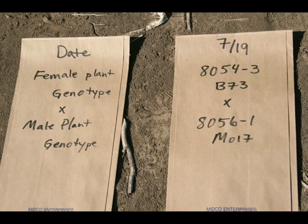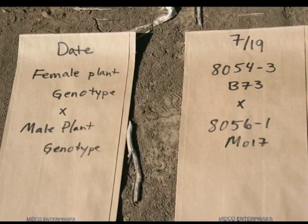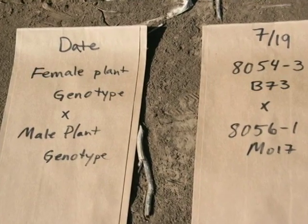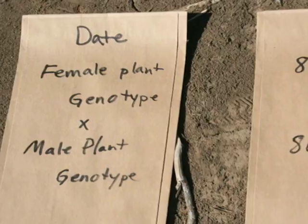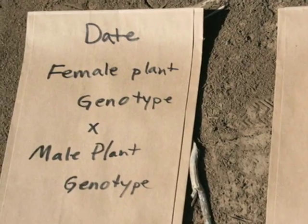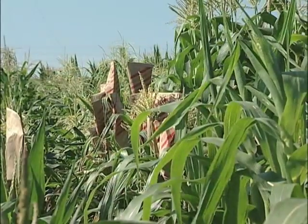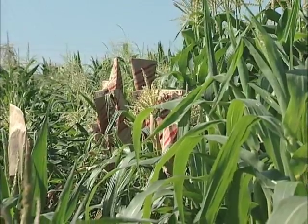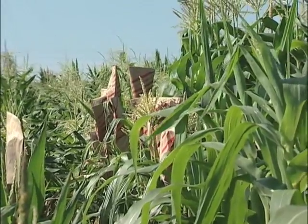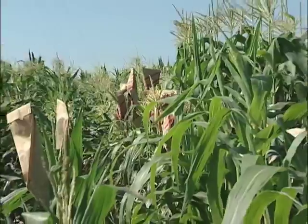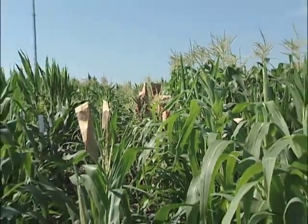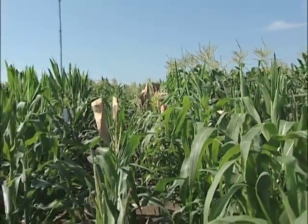First, the brown tassel bag must be clearly labeled with the genotypes of the parents and the date. By convention, the genotype of the female flower receiving the pollen is put on top and the male underneath. It is easy to remember if you think of the old adage, ladies first. Labeling the bag when you put it up helps you keep track of your crosses down the road, and the date can help you tell the difference between bags you just put up and bags put up the previous day.